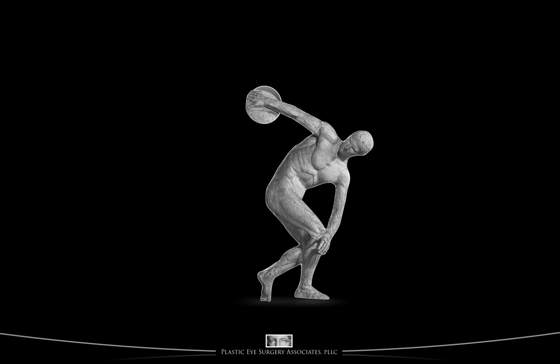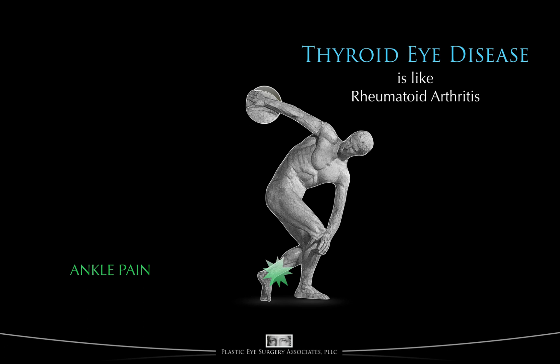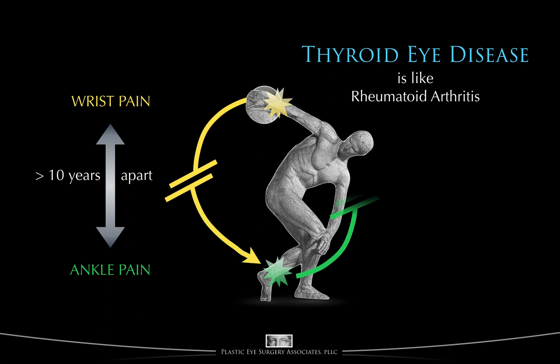I like to explain the relationship between the thyroid and the eyes in autoimmune thyroid disorder by saying that it's like rheumatoid arthritis. Like TED, rheumatoid arthritis is an autoimmune disorder. In some people, rheumatoid causes wrist or hand deformities and pain. In others, rheumatoid arthritis may cause foot or ankle pain. Some unfortunates with rheumatoid arthritis get both wrist and ankle pain — and if someone gets both, the wrist and ankle pains may occur even decades apart. The wrist pain doesn't cause the ankle pain, and the ankle pain doesn't cause the wrist pain. The wrist and ankle pains are endpoints of the same disease — an autoimmune process caused by an autoimmune antibody attacking the joints independent of one another.